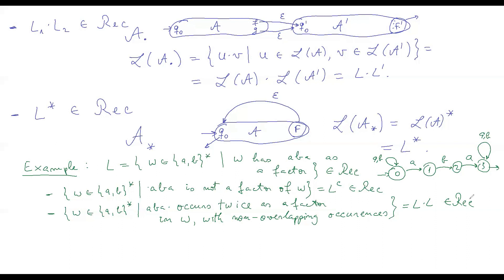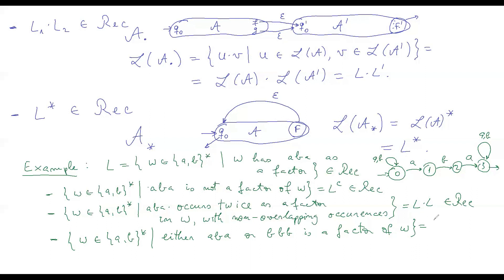Or you can also prove that all words in {A,B}* such that either ABA or BBB is a factor of W is recognizable. This is the union of two similar languages: one being the language with ABA as a factor, and the other being the set of words with BBB as a factor, which is recognizable in a very similar way. So their union, meaning this example, is a recognizable language as well.